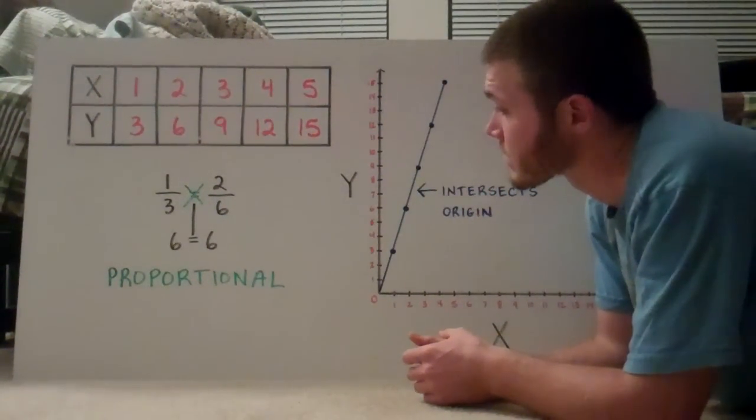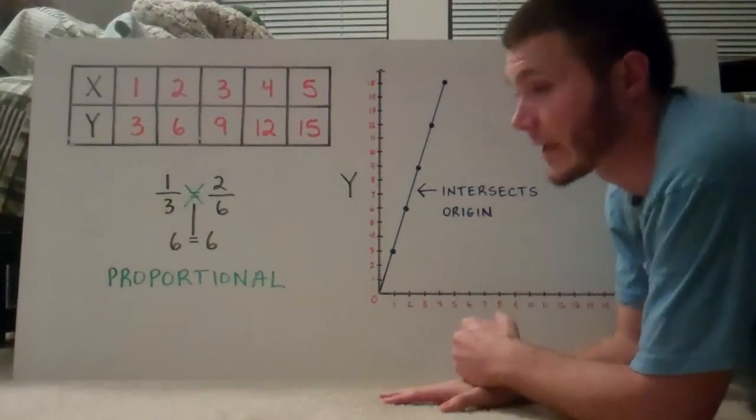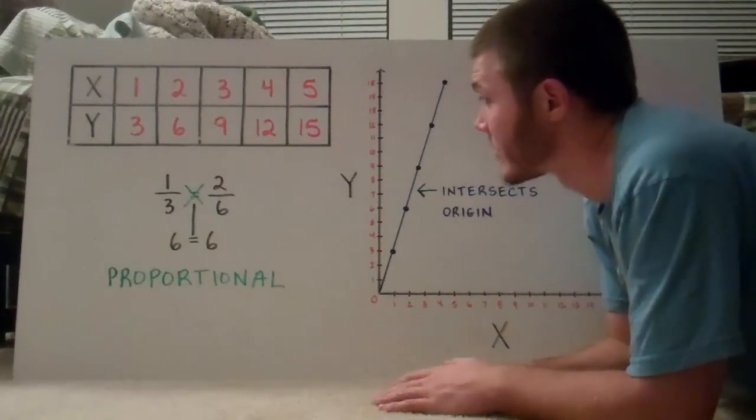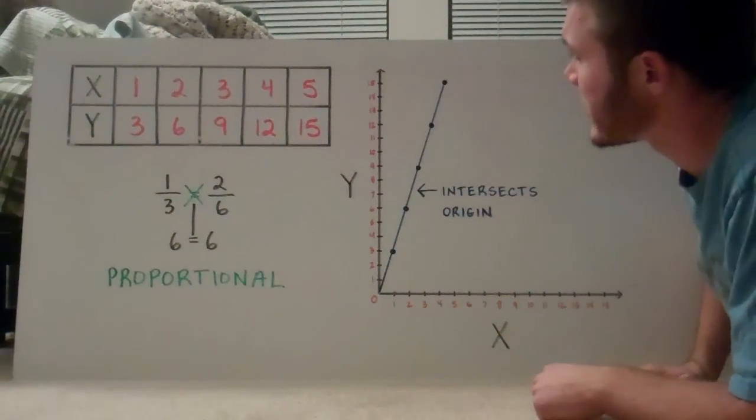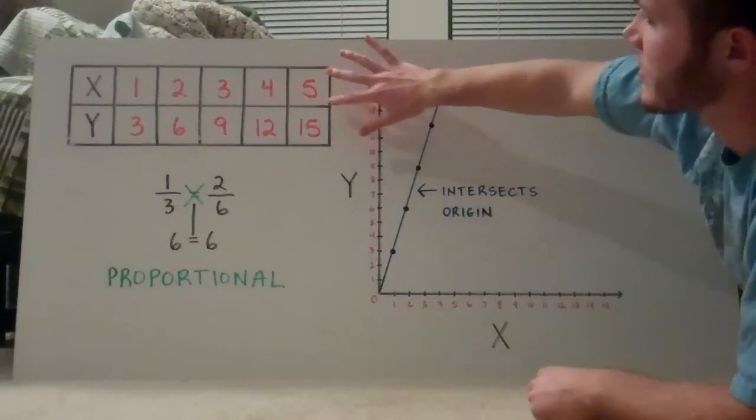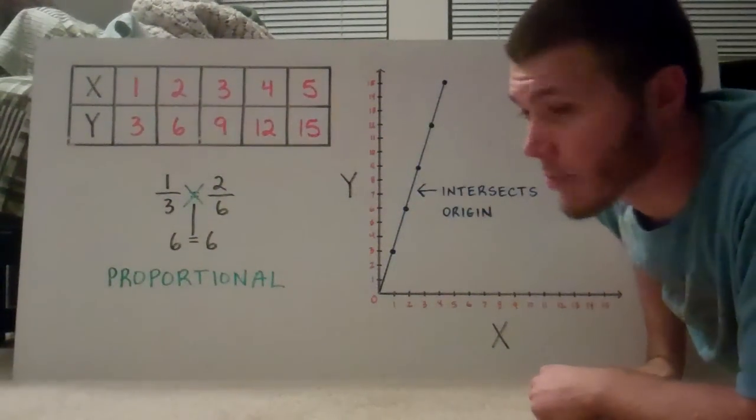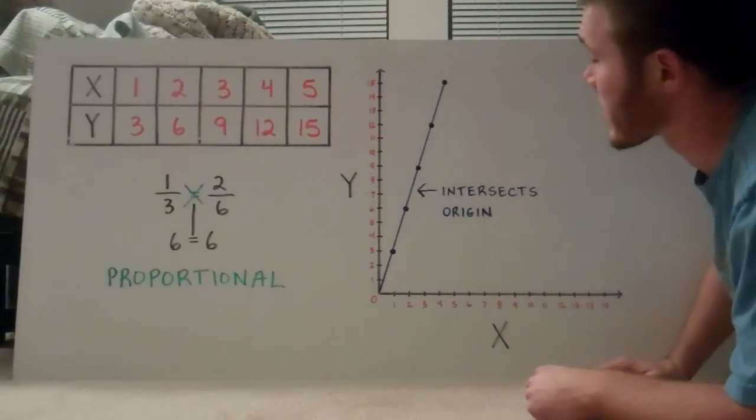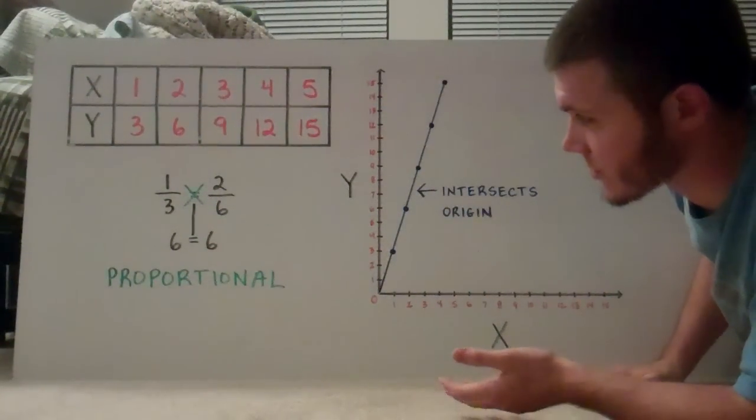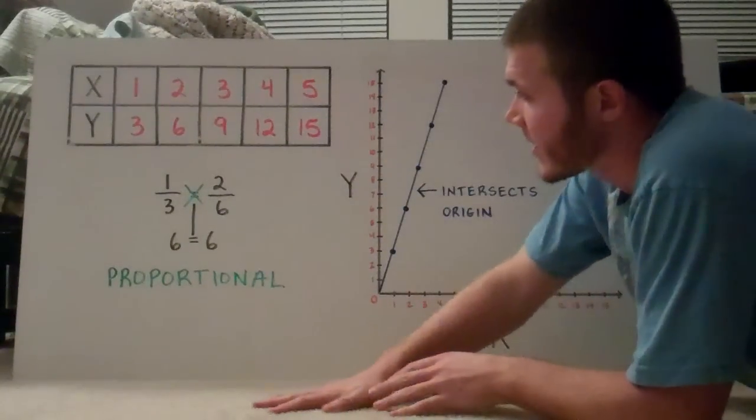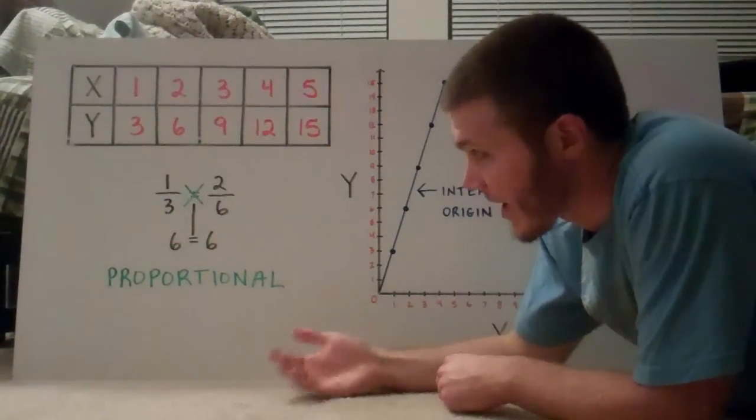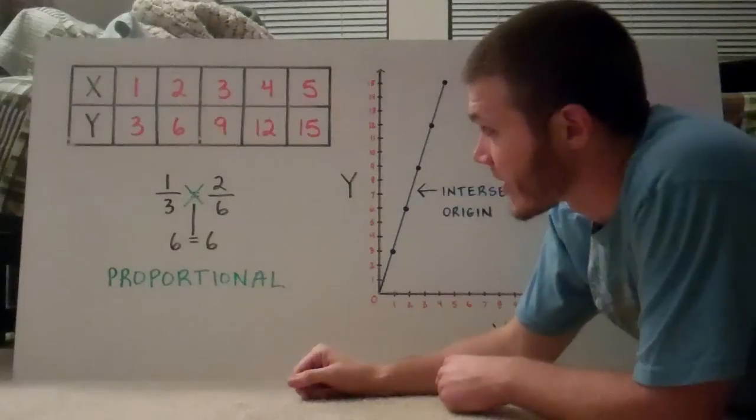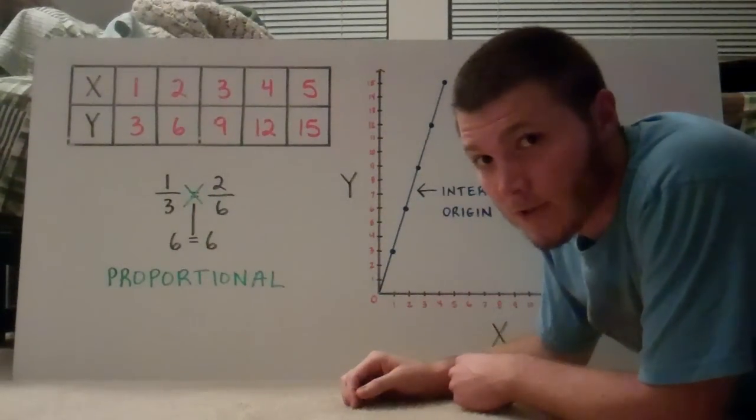So that's actually the last slide. Tomorrow we're going to work on graphing some of these tables, trying to determine if these values are proportional to each other. Remember, proportional, class, again, if the ratio increases or decreases by the same factor or the same divisor, then those two ratios are proportional.